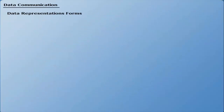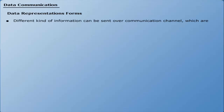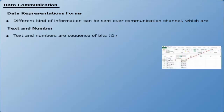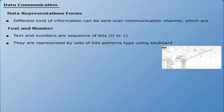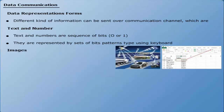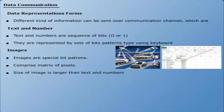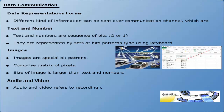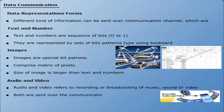Different kinds of information can be sent over through a communication channel. Number 1: Text and numbers — text and numbers are sequences of bits, zeros or ones. They are represented by a set of bit patterns typed using the keyboard and are called a code. Number 2: Images — images are also characterized by special bit patterns, comprised of a matrix of pixels (picture elements). The size of an image is larger than that of text and numbers; therefore, data transmission speed is important for reliable and fast delivery of images. Number 3: Audio and video — audio and video refers to the recording or broadcasting of music, sound, and movies. They are also sent over the communication system.